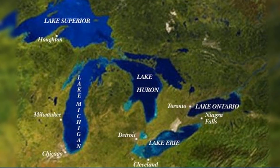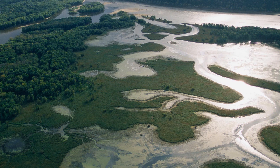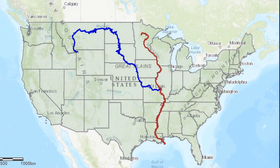The Great Lakes contain the planet's largest area of freshwater. Lake Superior, located between USA and Canada, is the largest freshwater lake in the world. The Missouri River in the USA is the longest river in North America at 3,767 kilometers long. The Missouri River joins with the Mississippi River and forms one of the largest river systems in the world.